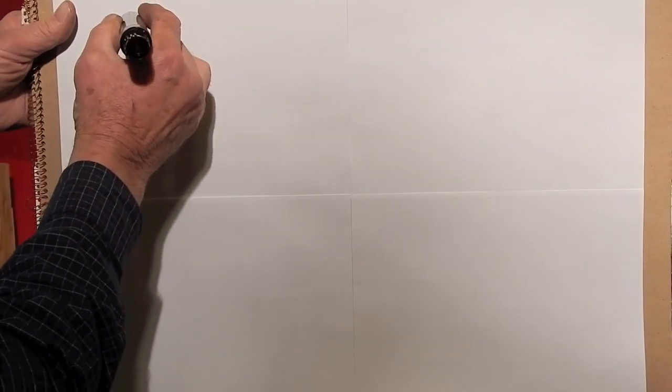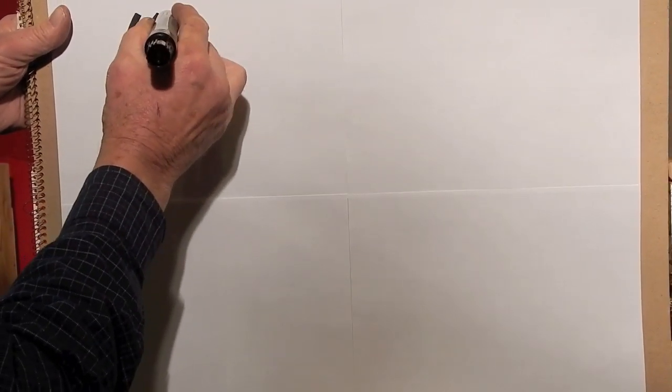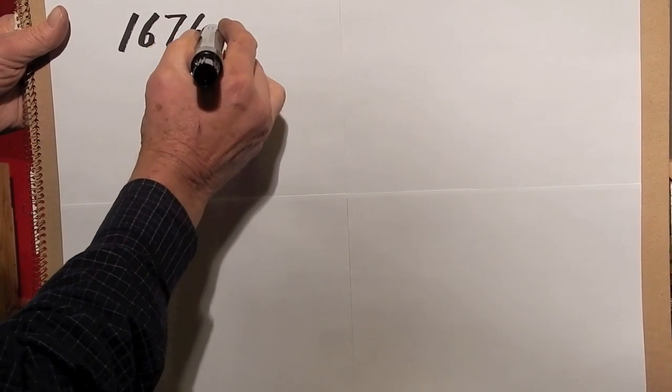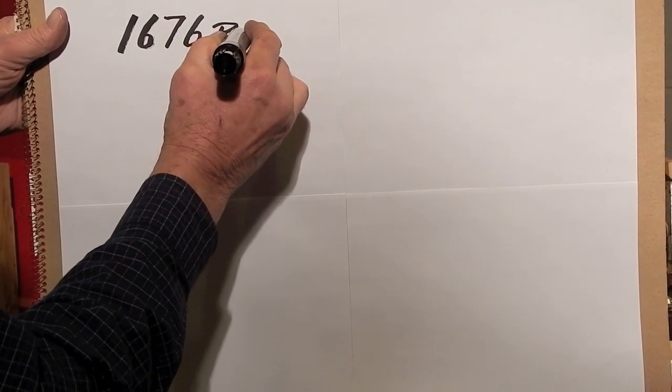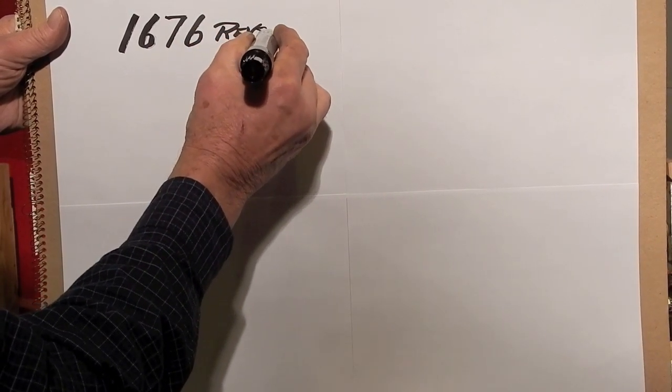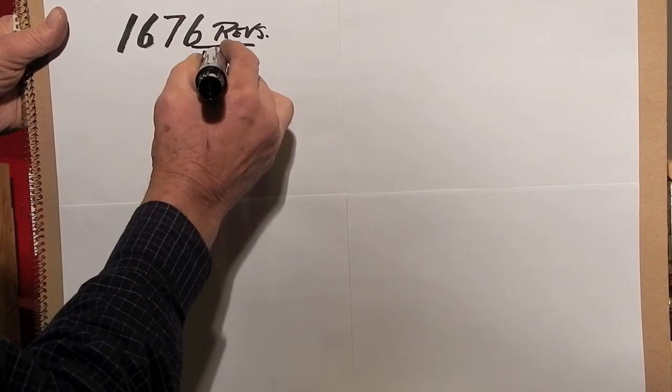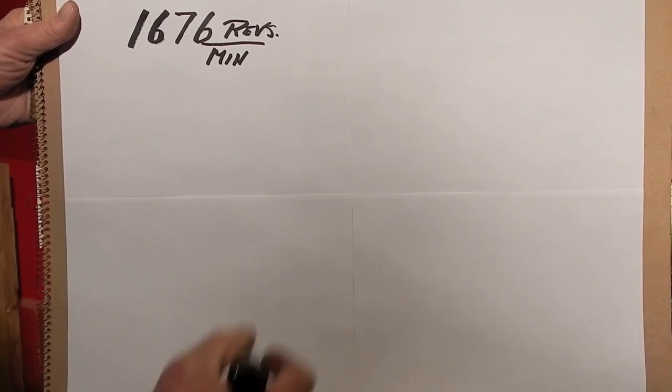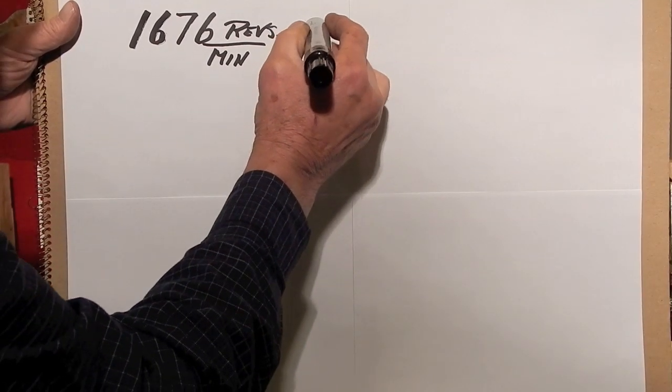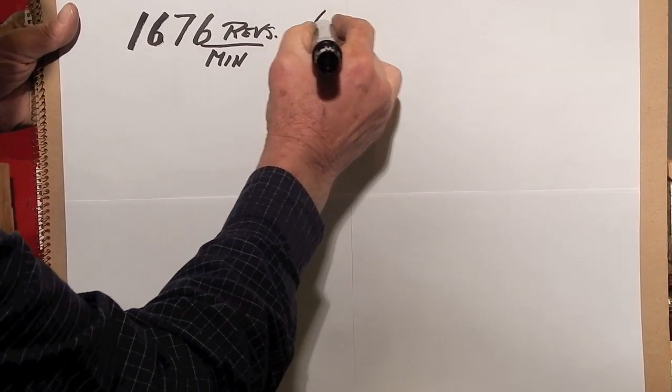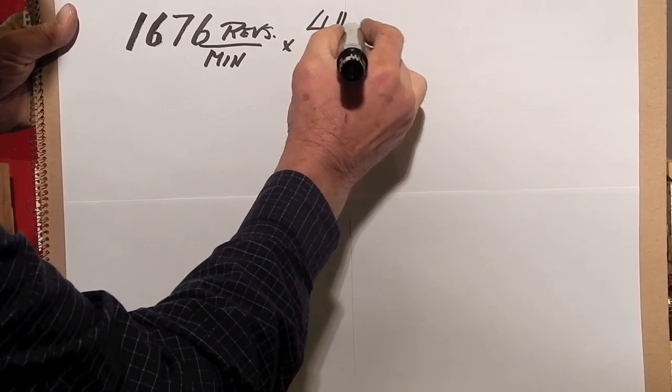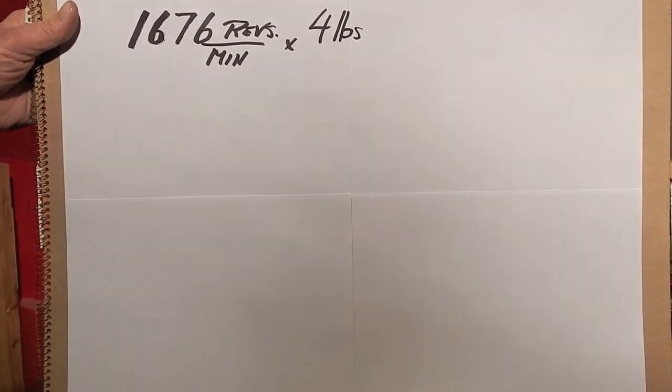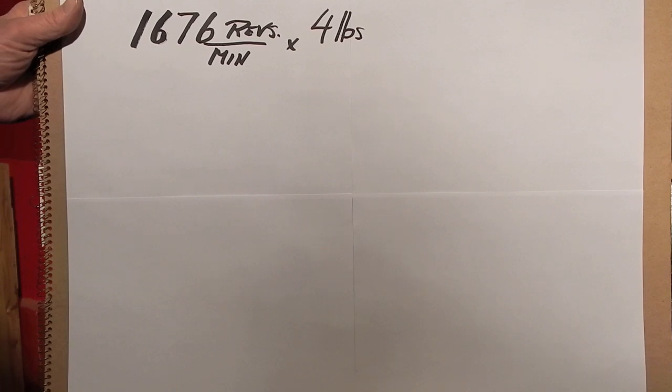Let's calculate the horsepower. The motor ran at 1676 revolutions per minute and it produced a force of 4.4 pounds on the end of the six inch arm, the torque arm of the gimbal.